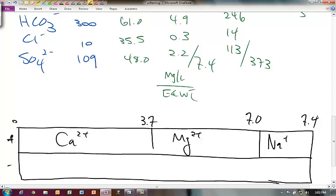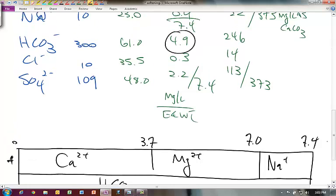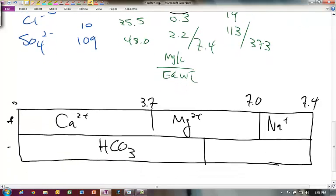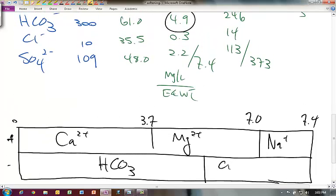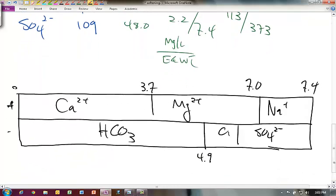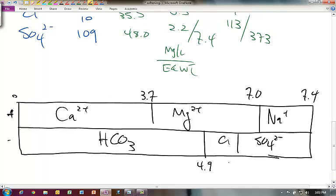Here's our anions. Now let's do the same thing for our anions. Bicarbonate HCO₃⁻—we have 4.9 equivalents. So that's going to be at 4.9. What else have we got? Chloride is just a little tiny one, and then we have sulfate SO₄²⁻. That would be 4.9 plus 0.3 would be 5.2, and 7.4 would be here. So that's our bar diagram.